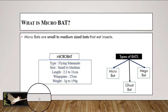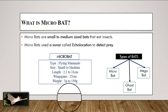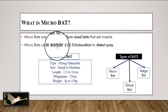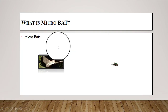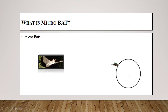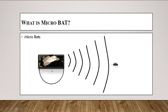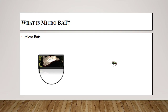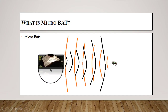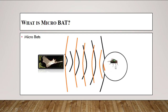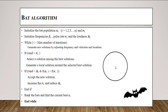Microbats use a sonar called echolocation to detect prey. The microbat creates a highly pitched sound pulse, and the echo bounces back to the bat. This echo tells the microbat about the distance, size, and speed of the target. This echolocation behavior is the basis of the bat algorithm we are going to implement.